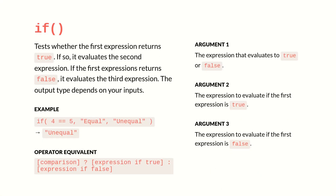If you go to the Notion formulas cheat sheet at notion.vip/formulas, you'll find the IF function. You'll see that it takes three arguments. The first argument is an expression that returns the value of true or false, and typically that expression is going to compare two values. The second argument is the operation to perform if that expression returns true, and the third argument is the operation to perform if that first argument returns false.